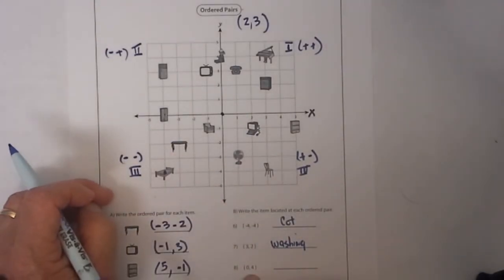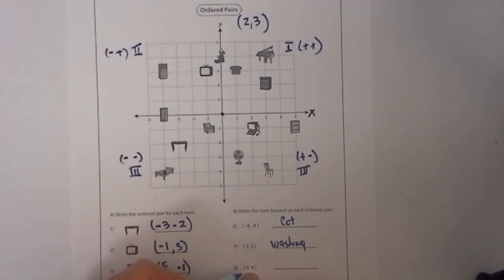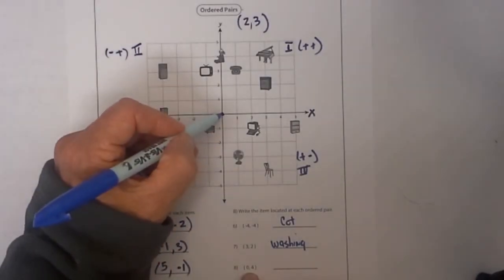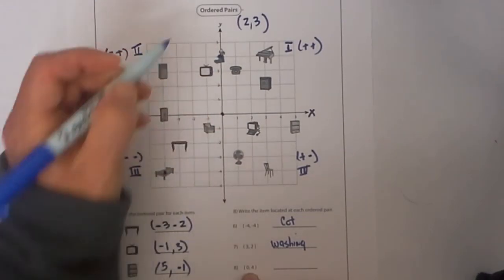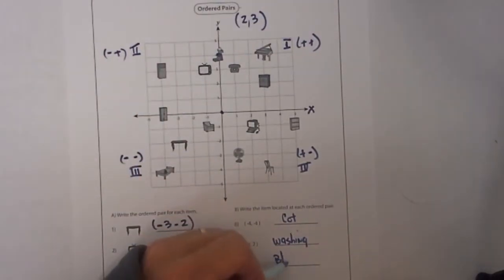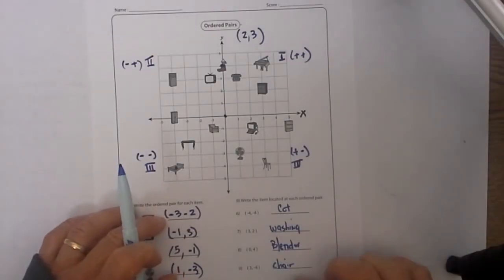Let's go ahead and do two more. First we start at 0 for the x and then we go up 4, 1, 2, 3, 4 and it is right there and that is the blender.